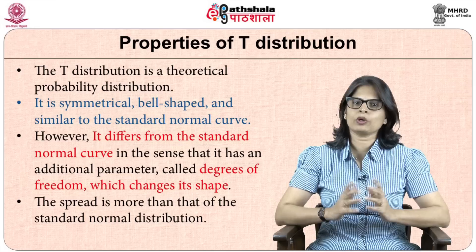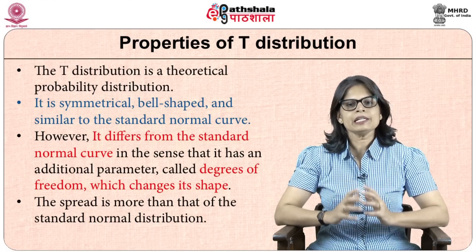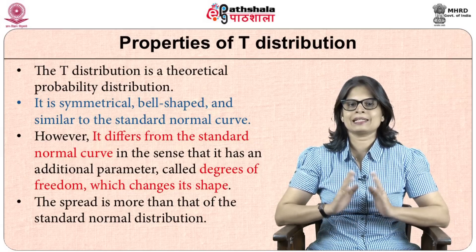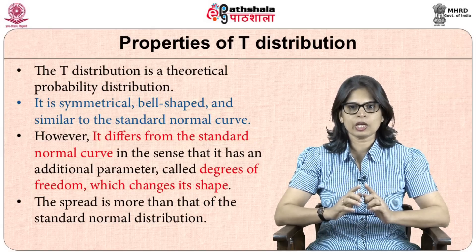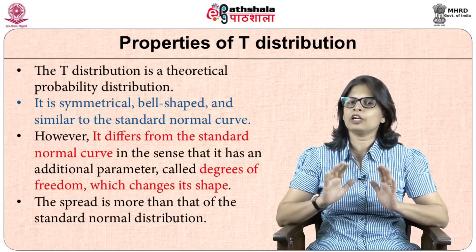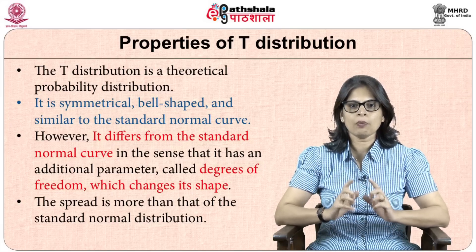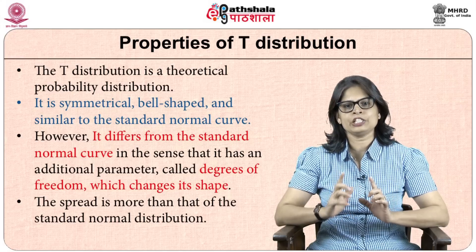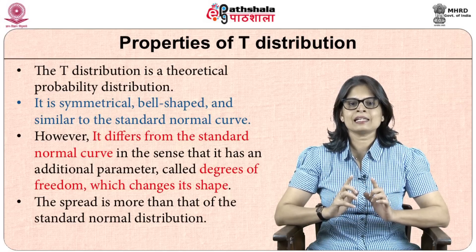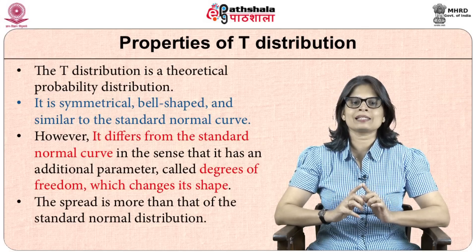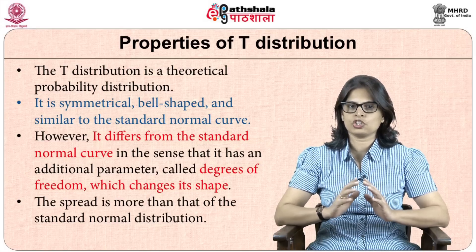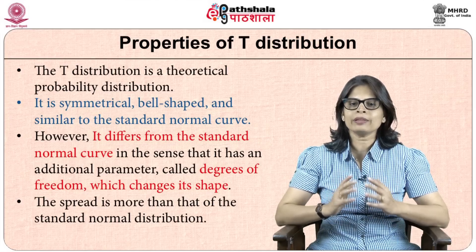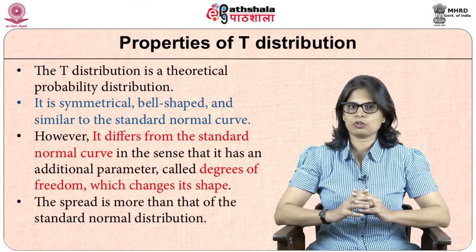The t-distribution is a theoretical probability distribution. It is symmetrical, bell-shaped, and similar to the standard normal curve. However, there is a slight difference: it has an additional parameter called degrees of freedom which changes its shape. The spread of the t-distribution is more than that of the standard normal distribution.